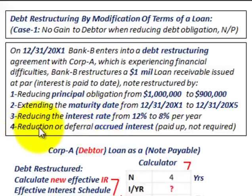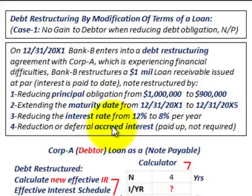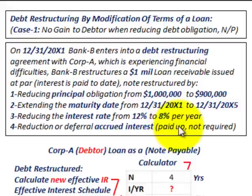Point four is the reduction or deferral of accrued interest, which would normally have to be considered on a modification of terms of a loan. But since the interest was paid up to date, it won't be required in this case.